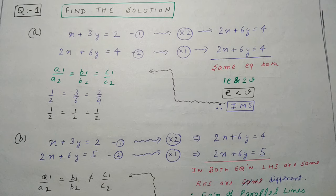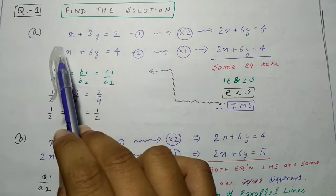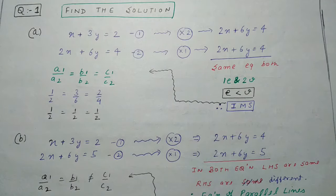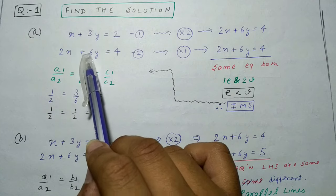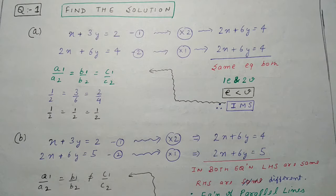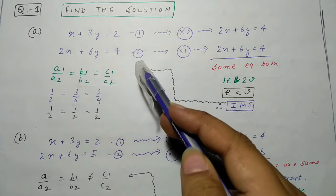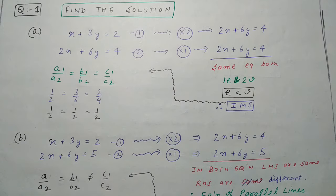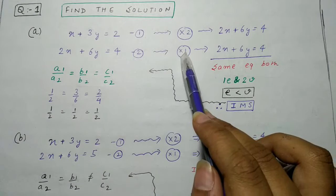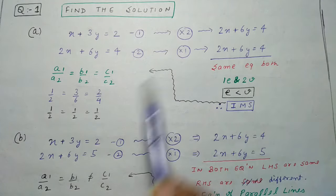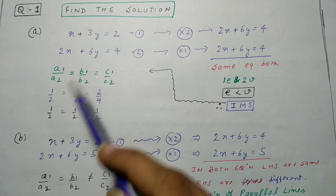अब question number 1 देखते हैं। System of equations: x + 3y = 2 और 2x + 6y = 4। Elimination method लगाते हैं - पहली equation को 2 से multiply करने पर 2x + 6y = 4 आता है, और दूसरी equation भी 2x + 6y = 4 है। दोनो equations same हो गईं।